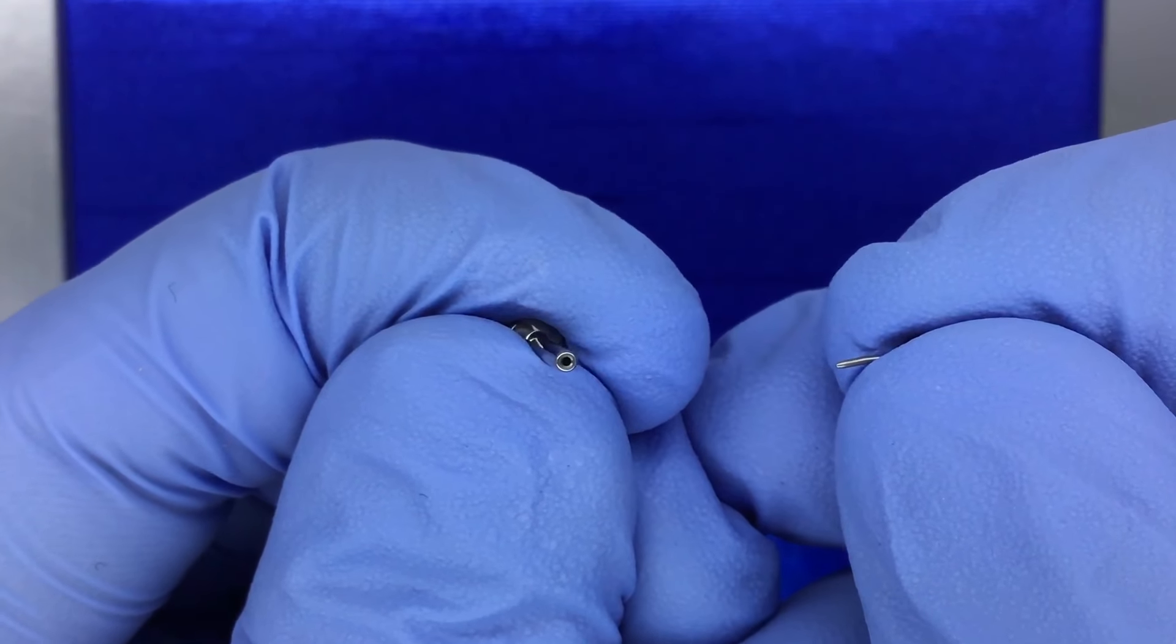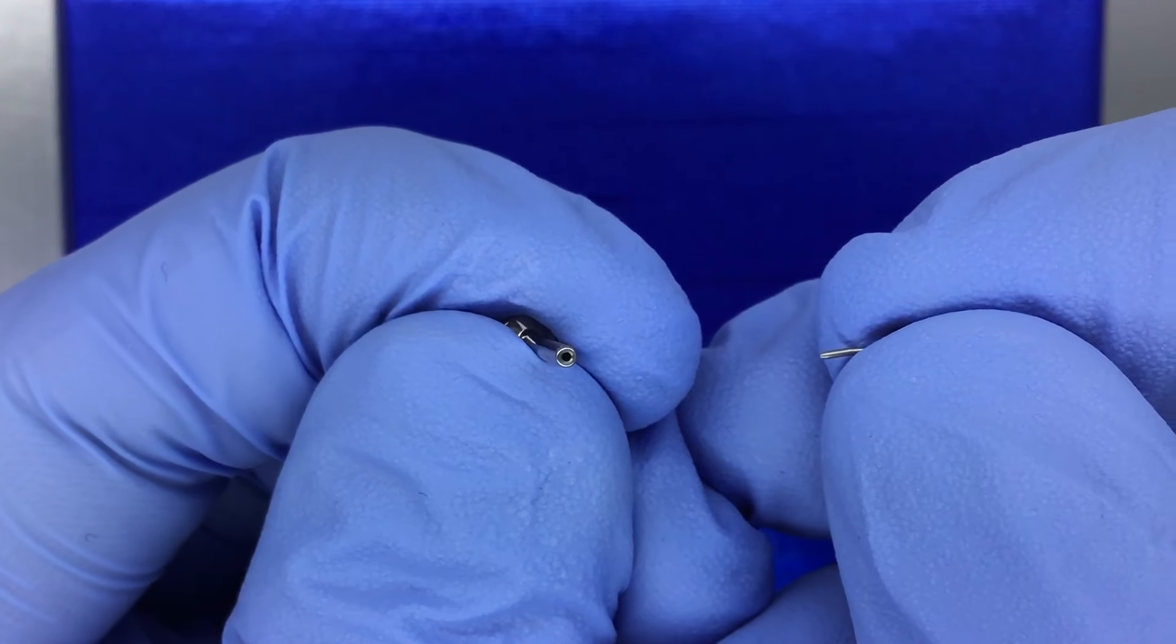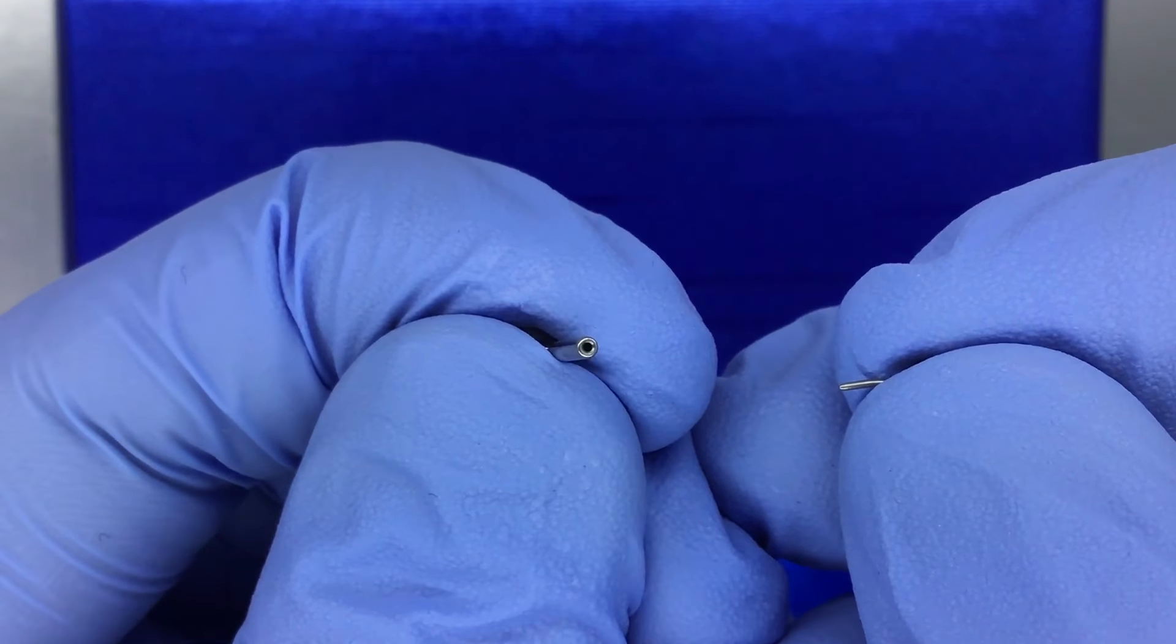And you slide in the post backwards into the piercing. So if it's in a nostril, it's kind of weird at first, but you slide it right in through the back side of the piercing and then you slide in your top just like so.